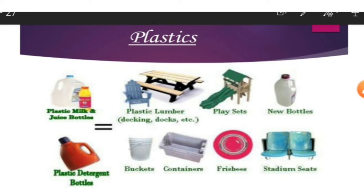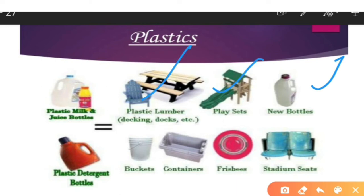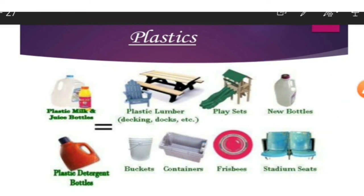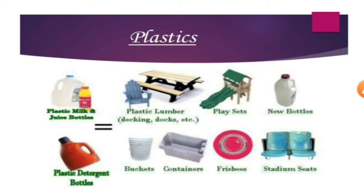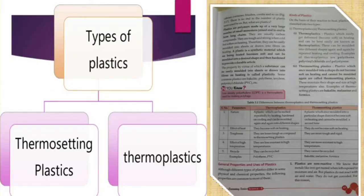Now come to plastics. What is plastic? Most things are made from plastic — bottles, toys, tables — most household things are made from plastic, even stadium seats. So we can't replace plastic easily. So what are the types of plastics? Plastic is a polymer. It can be of two types: thermosetting plastic and thermoplastic.